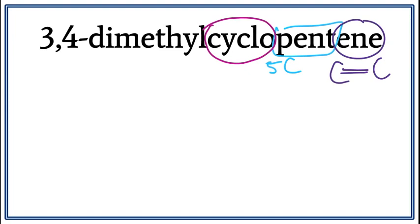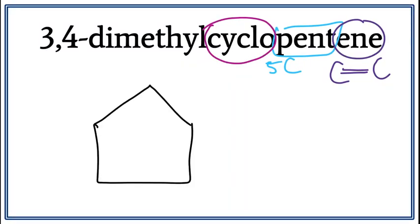When you draw the five carbons in a ring, it will be a pentagon. So let's draw the pentagon. Now we have to add the double bond. Since we don't see a number for the double bond, we assume that it is on the first carbon, meaning it is between the first and the second carbon. Let's number these carbons and draw the double bond between the first and the second carbon.